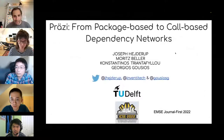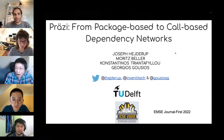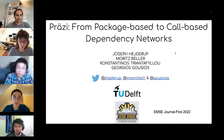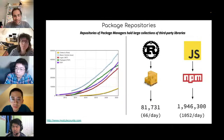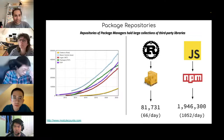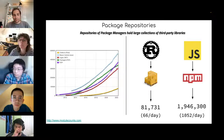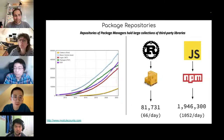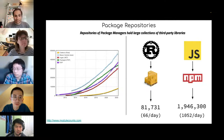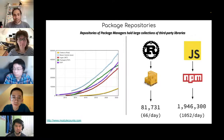Hello everyone. My name is Joseph Heidrup and I'm going to talk about PREZZI: from package-based to call-based dependency networks. This is work together with co-authors, and it is an MSc journal first paper. You probably have a favorite CLI to install packages — it could be npm, could be cargo for Rust, etc. Most of us use it to download packages to import into our software projects. These repositories are quite large: for example, crates.io for Rust sees about 66 new packages per day, and npm with almost 2 million packages sees about 1,052 new packages per day.